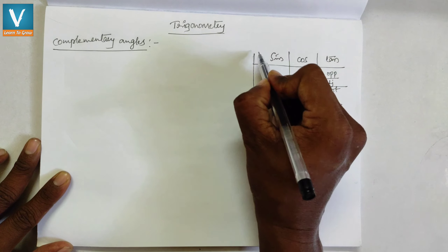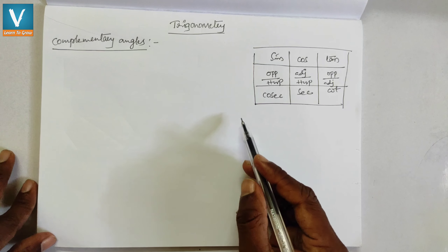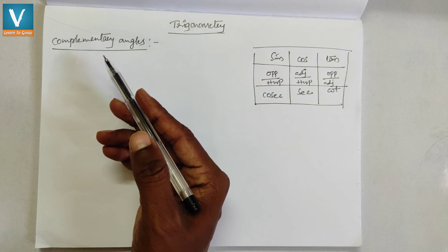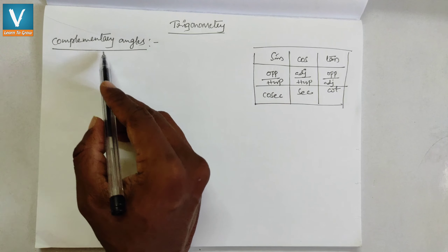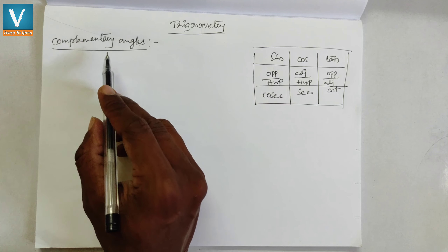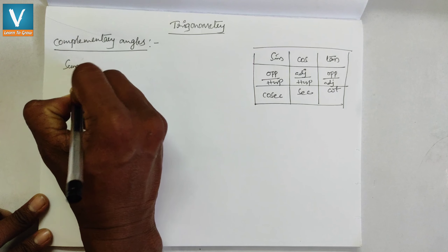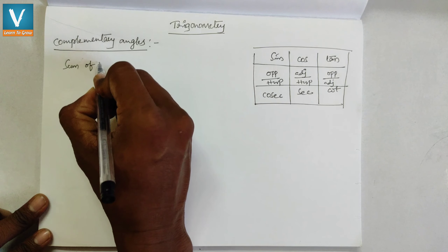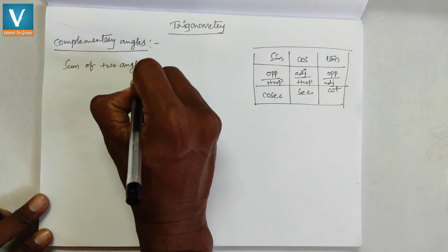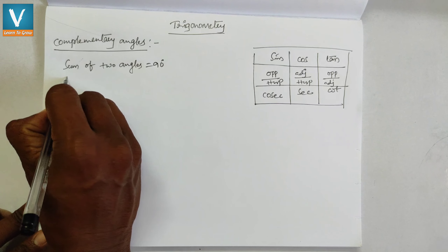Today's topic is about complementary angles. We know that two angles are said to be complementary if their sum is equal to 90 degrees — that is, the sum of two angles equals 90 degrees.